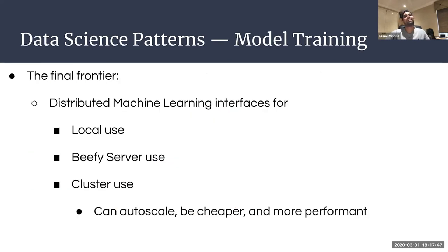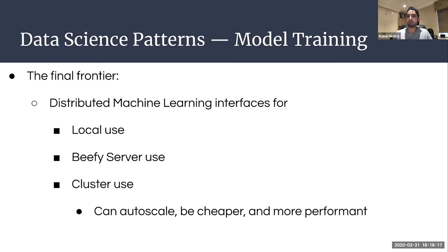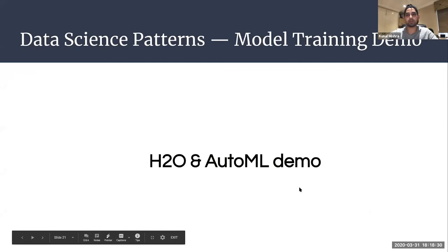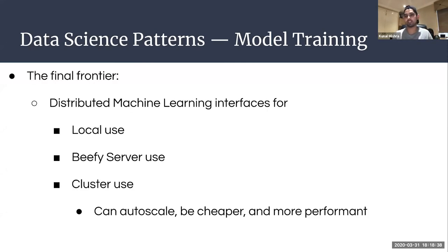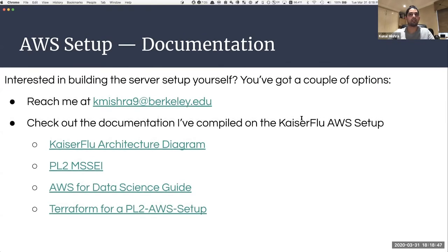The ideal solution — the final frontier — involves a distributed machine learning interface you can use just as easily on your laptop as on a server or a cluster with Spark and all the big data infrastructure. The key crux is that nobody agrees on how big 'big data' really is, so coming up with solutions that work for everybody, that can auto-scale, be cheaper and more performant at whatever scale you're working at, is really the goal. That interface is H2O — a distributed machine learning system that can do biostatistical and machine learning modeling.